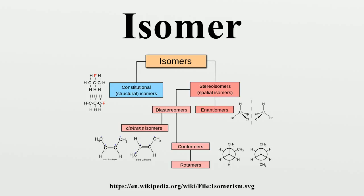Isomerism was first noticed in 1827, when Friedrich Wöhler prepared silver cyanate and noted that, although its elemental composition was identical to silver fulminate, its properties were quite different. This finding challenged the prevailing chemical understanding of the time, which held that chemical compounds could be different only when they had different elemental compositions. After additional discoveries of the same sort were made, such as Wöhler's 1828 discovery that urea has the same atomic composition as the chemically distinct ammonium cyanate.